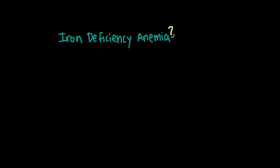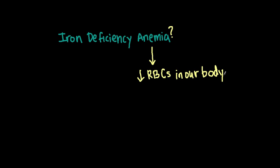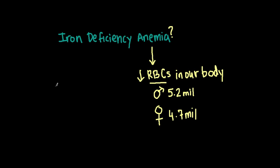Anemia is a condition, not a specific disease — it's like saying I have a fever. Anemia is defined as a decreased amount of circulating red blood cells. That's a big deal because red blood cells make up most of our cells in our body. Men have about 5.2 million cells and women have about 4.7 million.